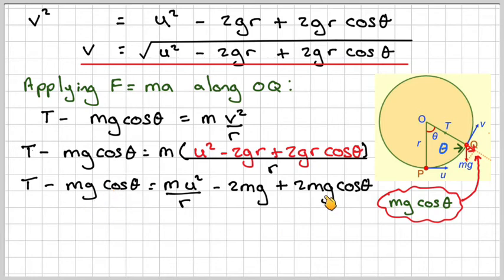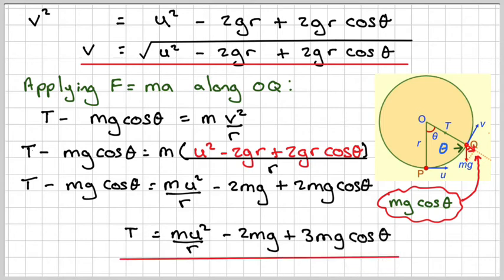And that's great because we take this over here, we're going to have three lots of this. So, the tension is MU squared over R minus 2M G plus 3M G cos theta.